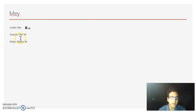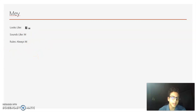Now we have May — it looks like this, and it always sounds like an M. Then Nay looks like an N, and it sounds like an N.